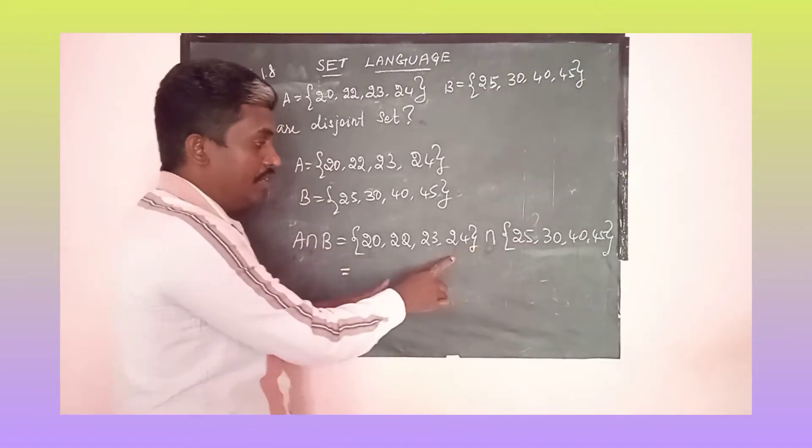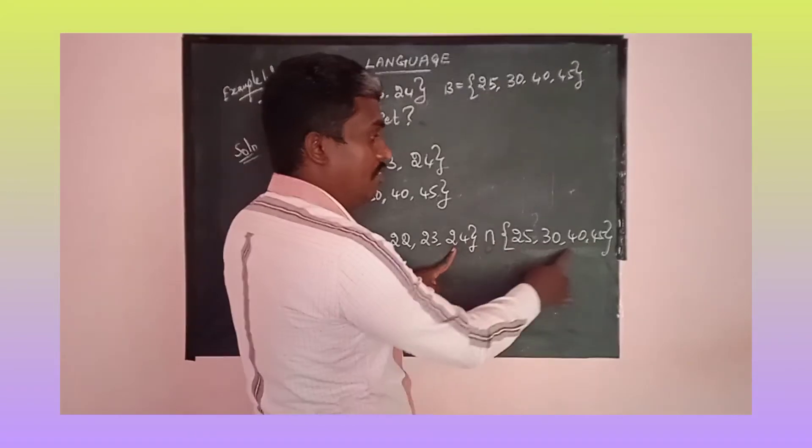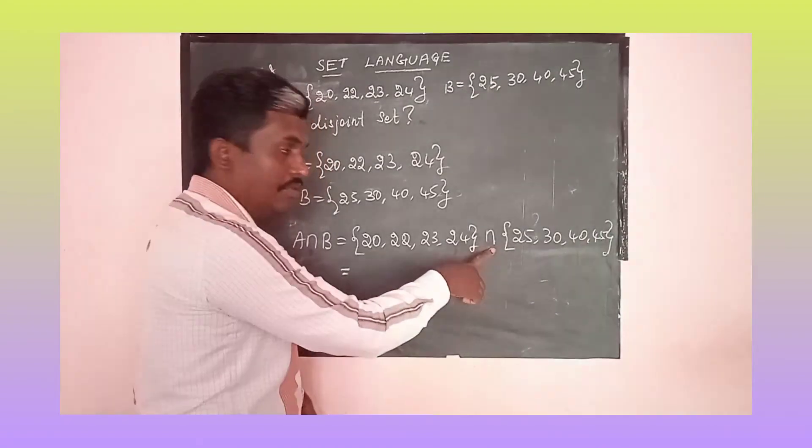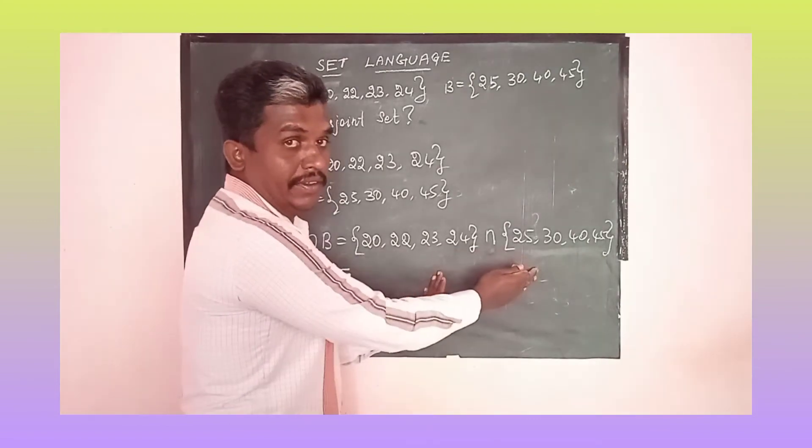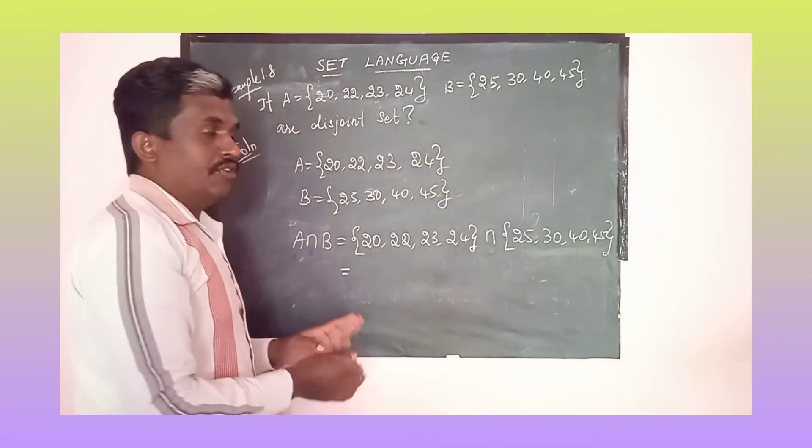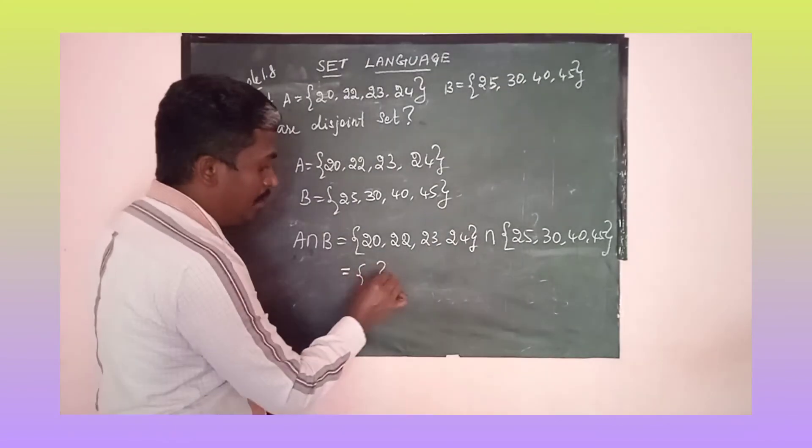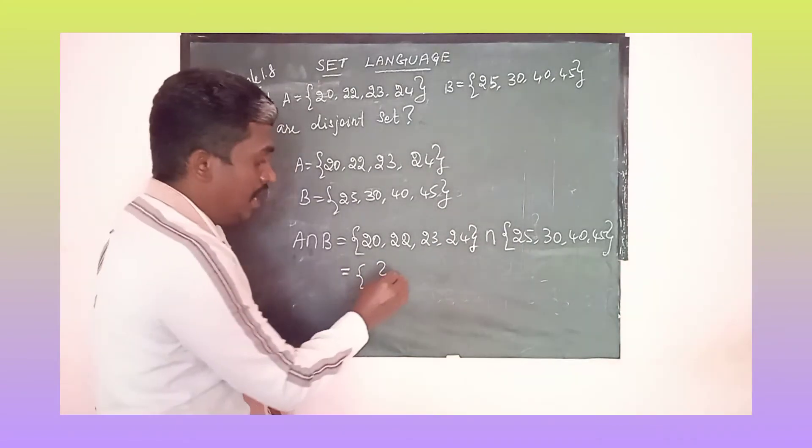There is no intersection. Suppose there was any 24. If there was any 24, we would write 24. That is called the intersection, the common elements. So there is no common element, the set will be an empty set.